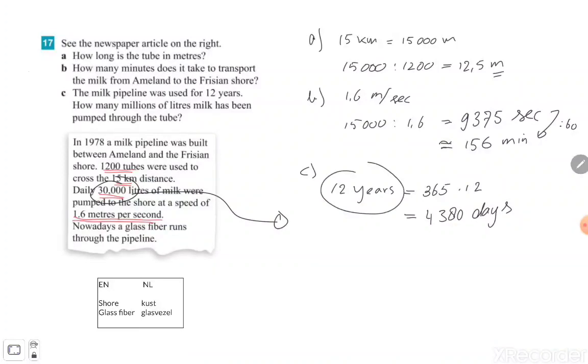All right, so 12 years is exactly the same as 4,380 days. The information they gave us is that 30,000 liters are pumped per day. So 4,380 multiplied with the 30,000 liters, then you know how many liters it was in 12 years, and that's 131 million 400 thousand liters.